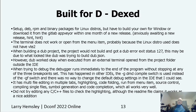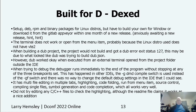The next D-specific editor is DEX. There are setup, dub, RPM, and binary packages for Linux on the release page, but you have to build your own for Windows or download it from the GitLab app within one month of a new release, which hasn't happened in a while. The terminal does not work or open from the menu item, probably because the Linux I used does not have VTE2 or GTK2 as they're no longer available. When building a dub project, it would not build and I got a dub error with exit status 127. However, dub did work when executed from an external terminal opened in the project folder outside the IDE.